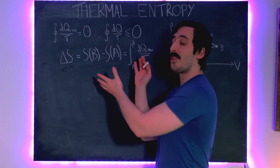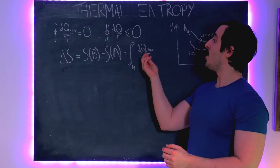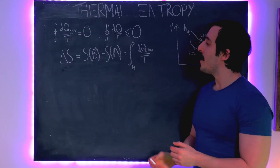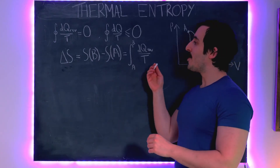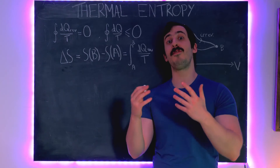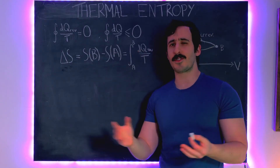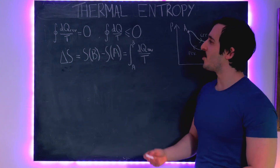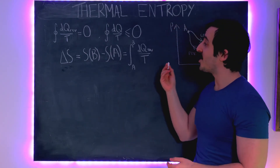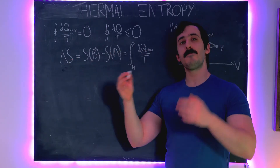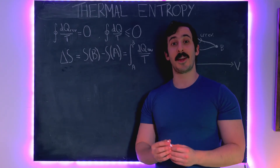At this stage it's not really anything more than a definition. We've defined this function of state and said it's the integral between the two states of DQ over T for a reversible process. But what we're going to see next is that this definition can reframe the second law of thermodynamics in what seems like a much more fundamental way. Even though this concept of entropy seems fairly arbitrary — there's no immediate thing in our physical world which we can immediately grasp for DQ over T — once we start reframing things in terms of S, the second law of thermodynamics becomes much more simple and fundamental.